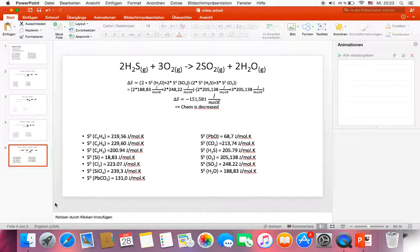And it is minus 151.58 joules per mole kelvin. The chaos of reaction d is also decreased.